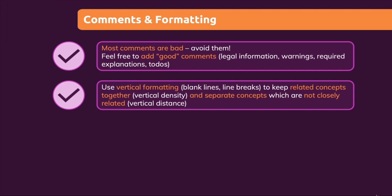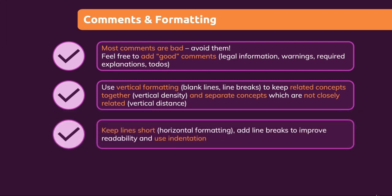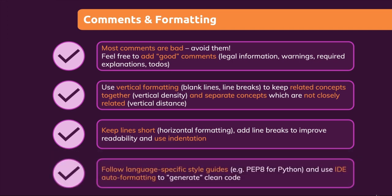A function should, for example, come before the function which it calls, if technically possible. When we talk about horizontal formatting, you want to keep lines short and add line breaks and split code across multiple lines to keep it easy to read and understand. Also use indentation to express relations between block statements and the code inside of them. Keep language-specific style guides like the PEP 8 style guide for Python in mind. Also use IDE auto-formatting and the help the IDE can give you when it comes to generating and writing clean code.